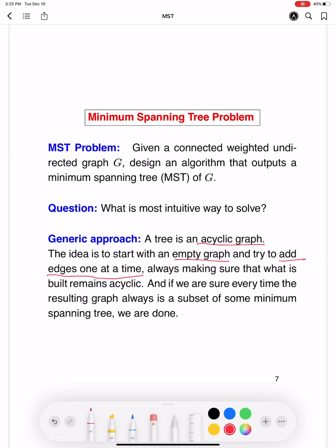So with this, we'll at least make sure that we are getting a tree. Additionally, we have to make sure that every time the resulting graph that we get by adding this new edge is a subset of some minimum spanning tree. That is the next thing that we have to ensure. That whenever we add this edge, it continues to be a minimum spanning tree, or it's a subset of a minimum spanning tree.